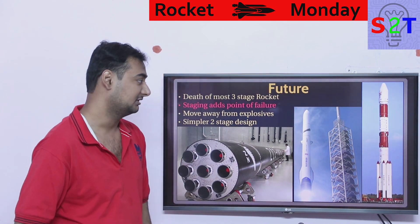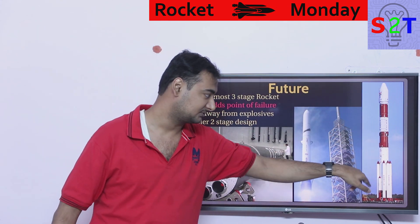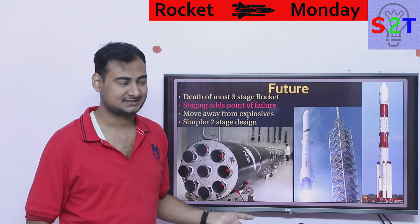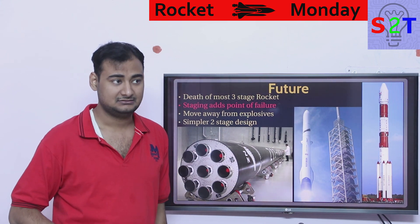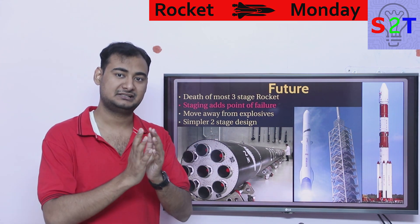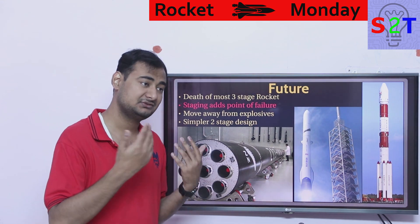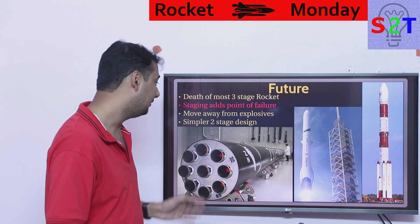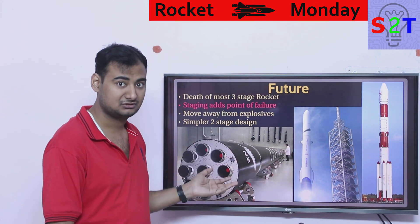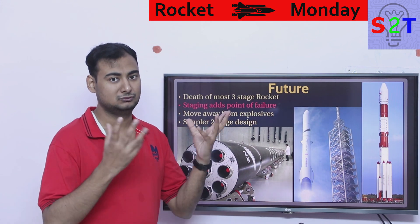We are also moving away from explosive separation. Think about how many explosives you'd need across a three- or four-stage rocket — expensive and unreliable. Sometimes metal deforms rather than breaking cleanly and you're stuck. The future favors reusable designs, so all future rocket designs are generally dual-stage systems using mechanical clamps rather than relying on explosive events. New Glenn and Electron are examples — dual stage, clamp-based separation.